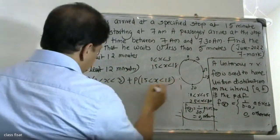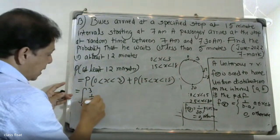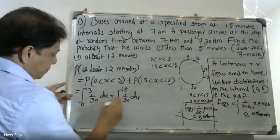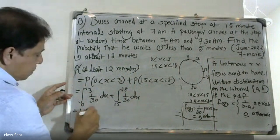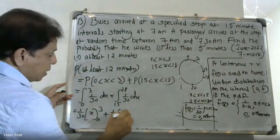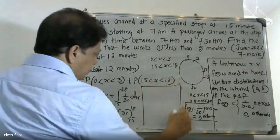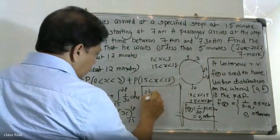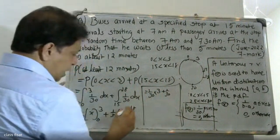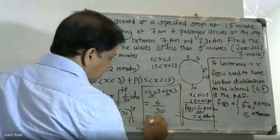The integration is: integral from 0 to 3 of f(x) which is 1 by 30, plus integral from 15 to 18 of 1 by 30. That equals 1 by 30 into (3 minus 0) plus 1 by 30 into (18 minus 15), which equals 3 by 30 plus 3 by 30, giving 6 by 30, equal to 1 by 5.